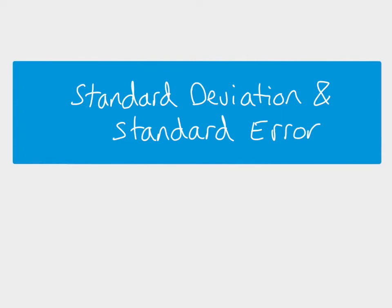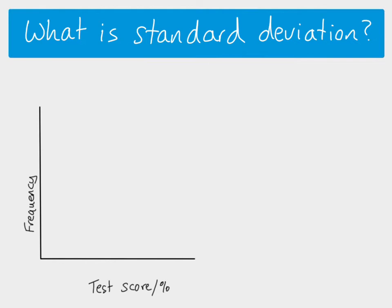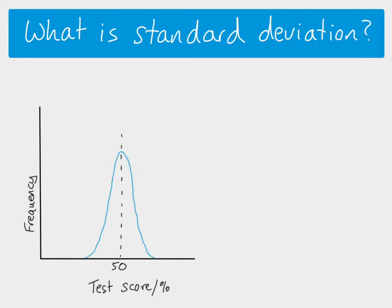Hi everyone, this video is looking at standard deviation and standard error, which are both ways of looking at the variation within your data. If we start with standard deviation as a general introduction, let's imagine that we have a class and they've done a test. We're going to look at the test score as a percentage against the frequency — the number of students who got those scores — and in this particular class the mean test score is 50%, and if you plot the data you get a roughly normal distribution.